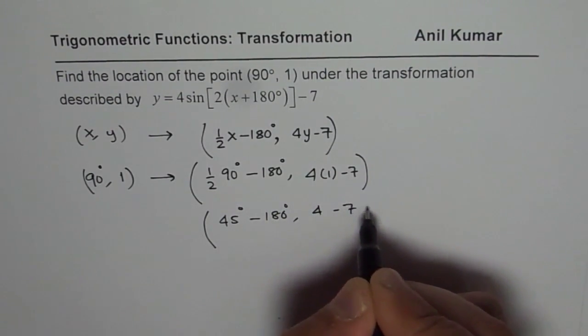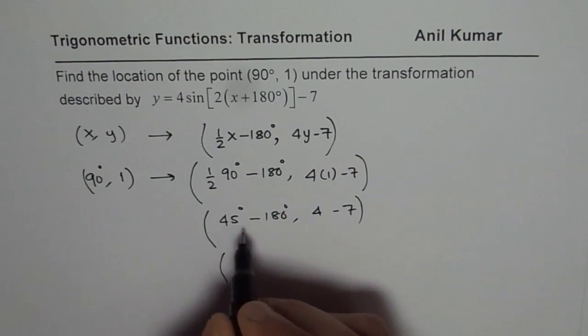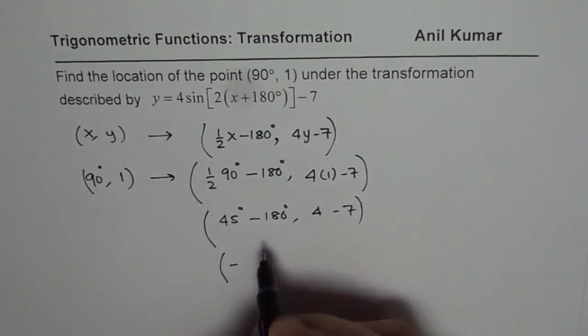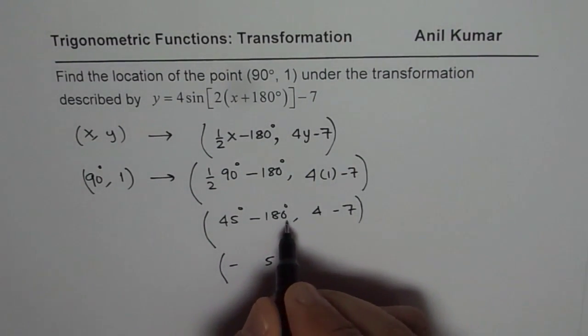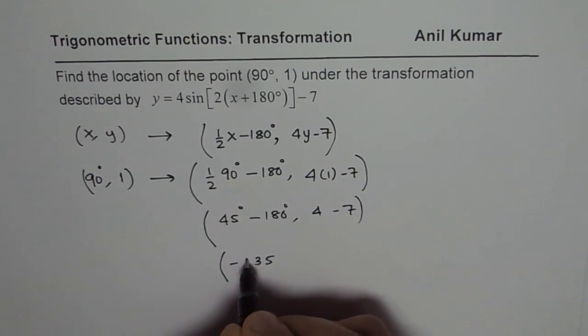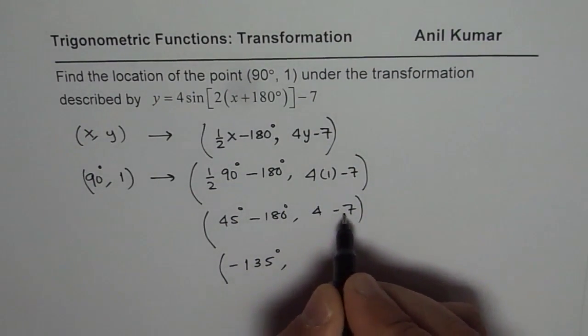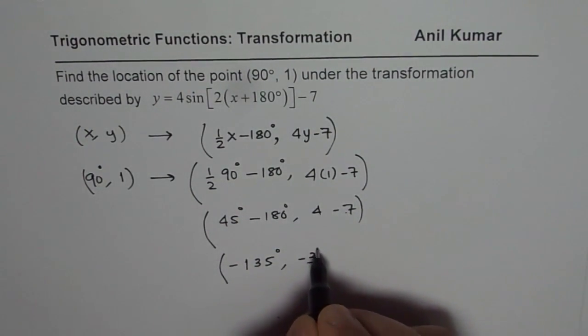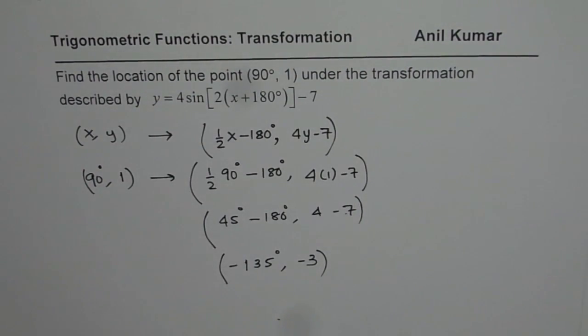And so we get our answer, which is minus 135 degrees and 4 minus 7 is minus 3. So that is the image point.